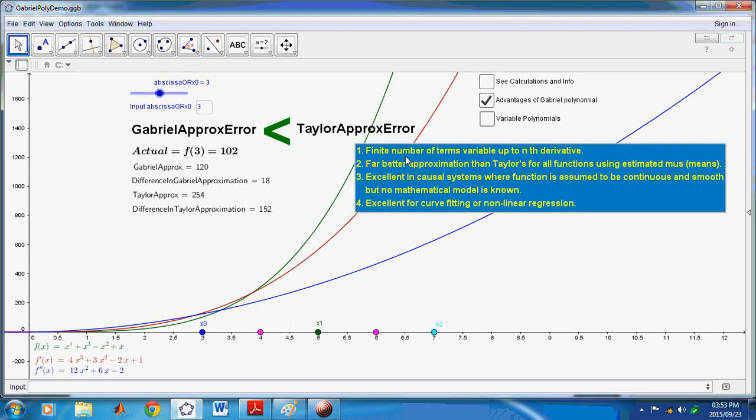And, so, that's what's happening there. You can also see the advantages of the Gabriel polynomial. And, these are very important. It always has a finite number of terms, variable up to the nth derivative. It is a far better approximation using estimated mu's. And, it's excellent in causal systems where the function is assumed to be continuous and smooth, but no mathematical model is known. Finally, it's very good for curve fitting or non-linear regression.